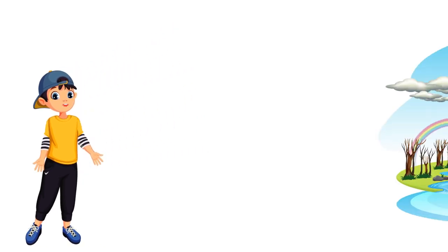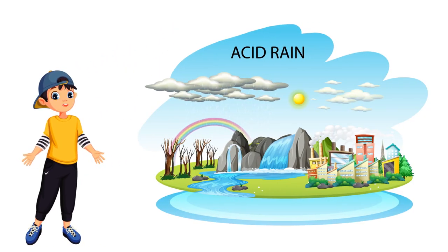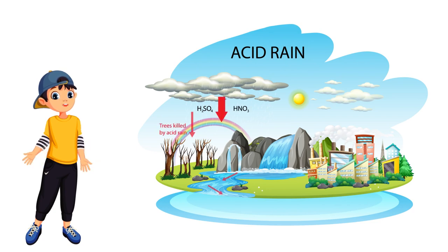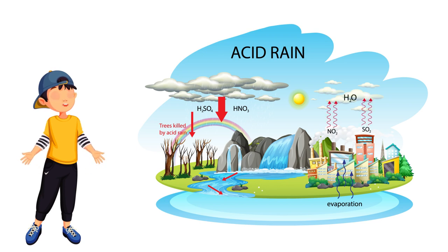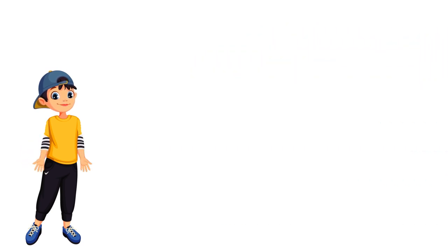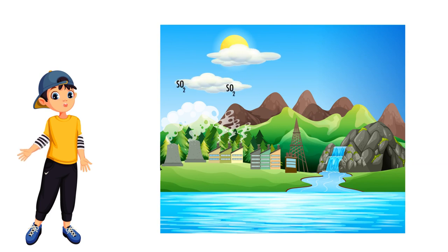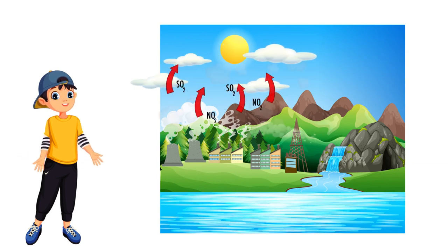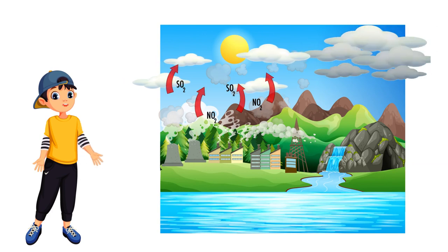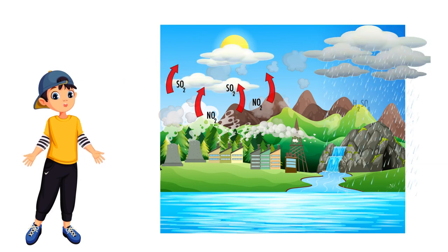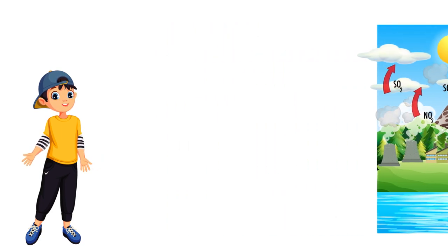Acid rain, or acid deposition, is a broad term that includes any form of precipitation with acidic components such as sulfuric or nitric acid that fall to the ground from the atmosphere in wet or dry forms. This can include rain, snow, fog, hail, or even dust that is acidic. Acid rain is caused by a chemical reaction that begins when compounds like sulfur dioxide and nitrogen oxides are released into the air. These substances can rise very high into the atmosphere, where they mix and react with water, oxygen, and other chemicals to form more acidic pollutants known as acid rain.